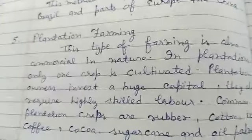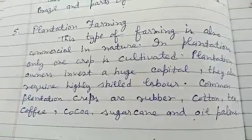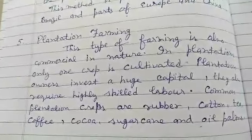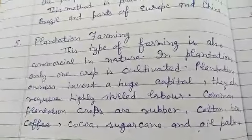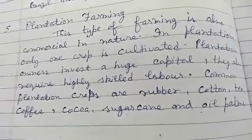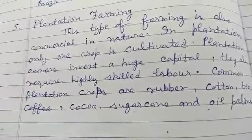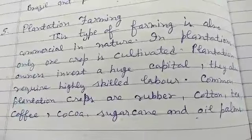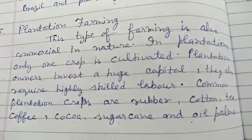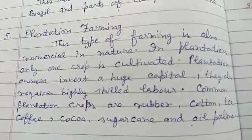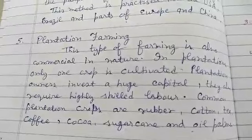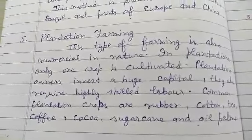The last and fifth type of farming is plantation farming. This type of farming is also commercial in nature, as it is also grown to earn profits. In plantation farming, only one crop is cultivated. Plantation owners invest a huge capital and require highly skilled labor. Common plantation crops are rubber, cotton, tea, coffee, cocoa, sugarcane, and oil palms. This is the end of the topic — in Part 3 we will discuss types of crops. Thanks, have a nice day.